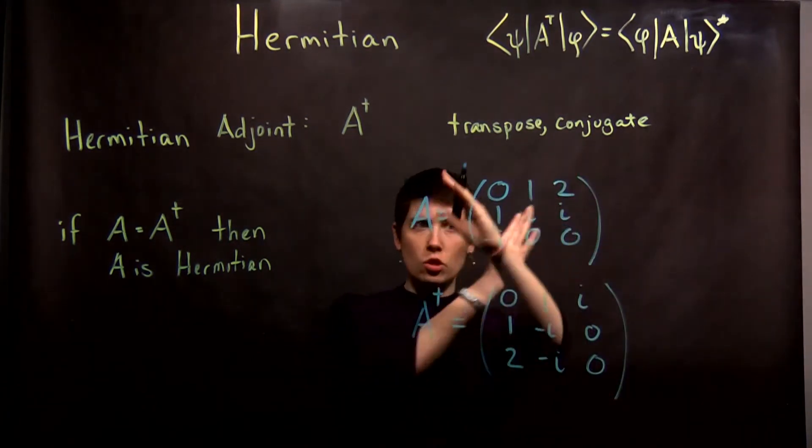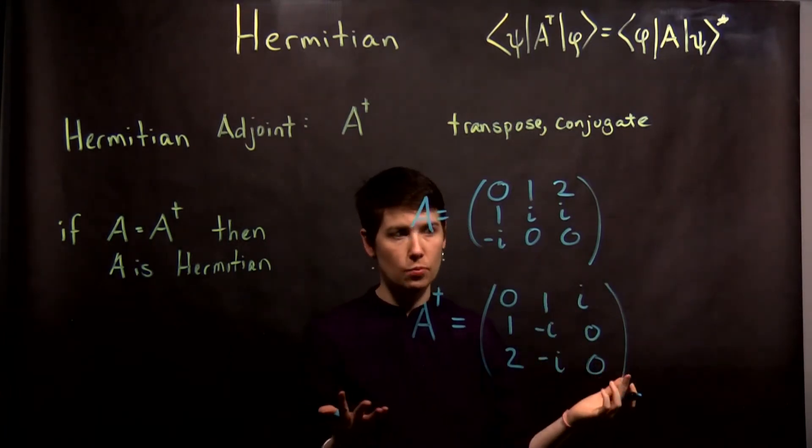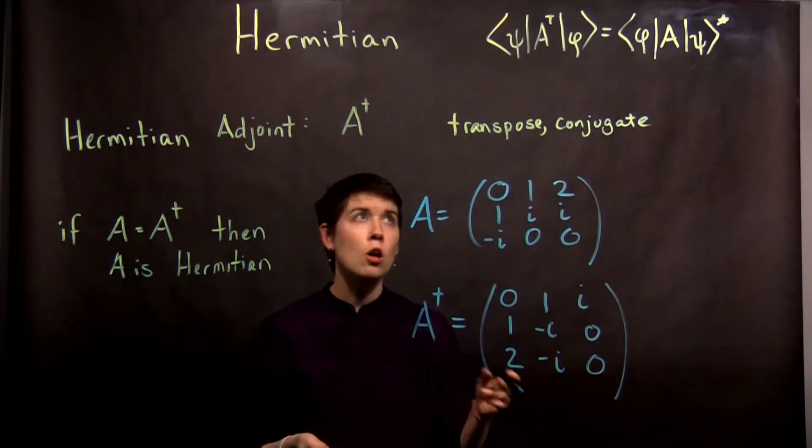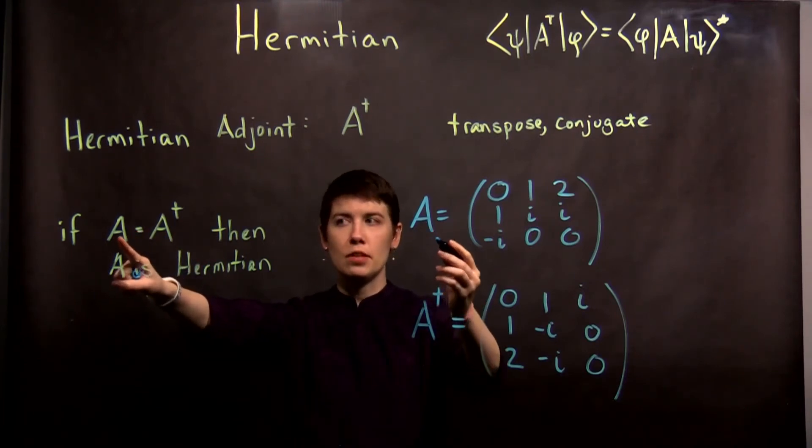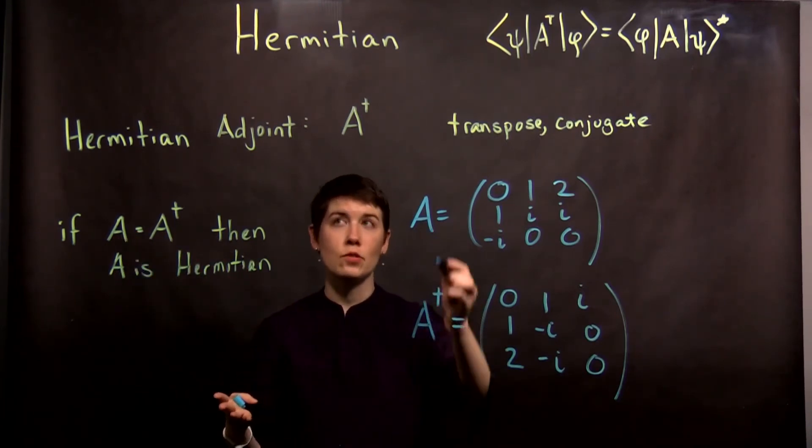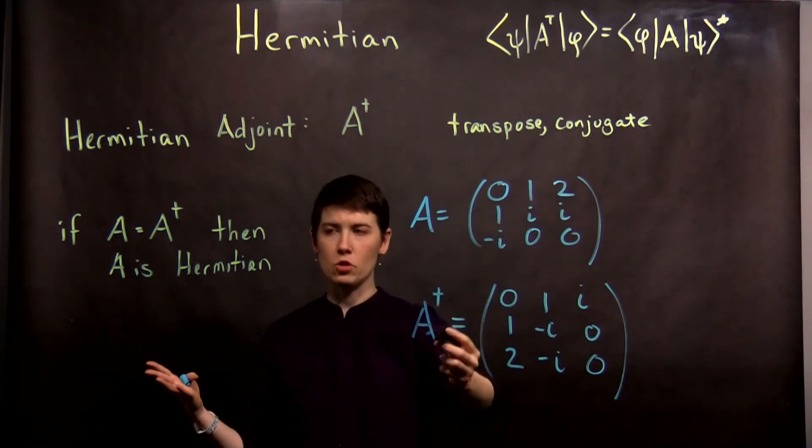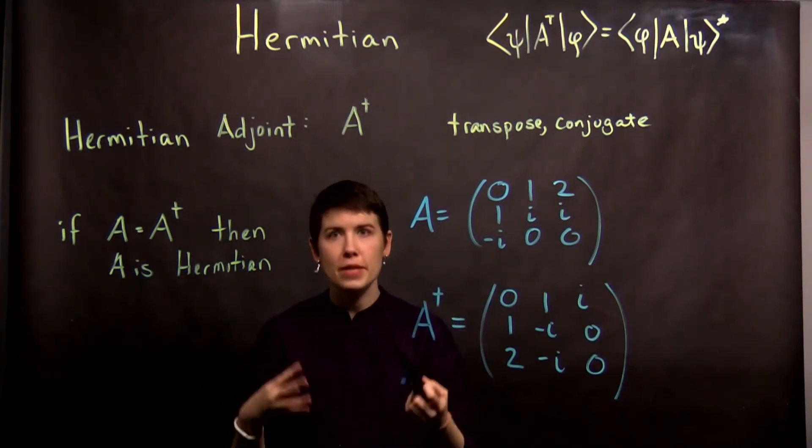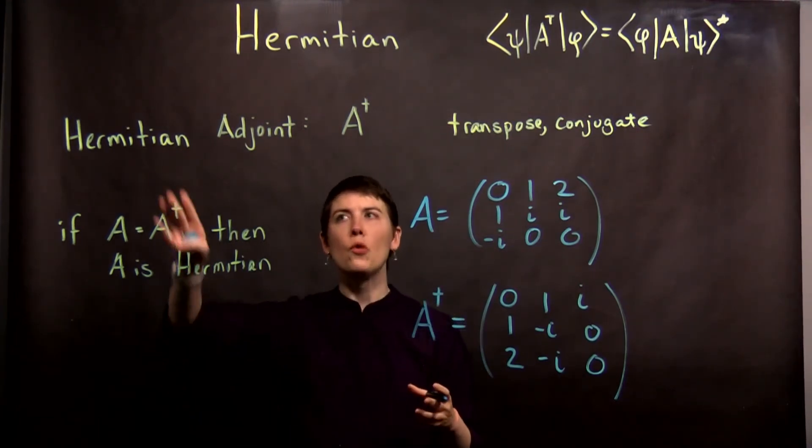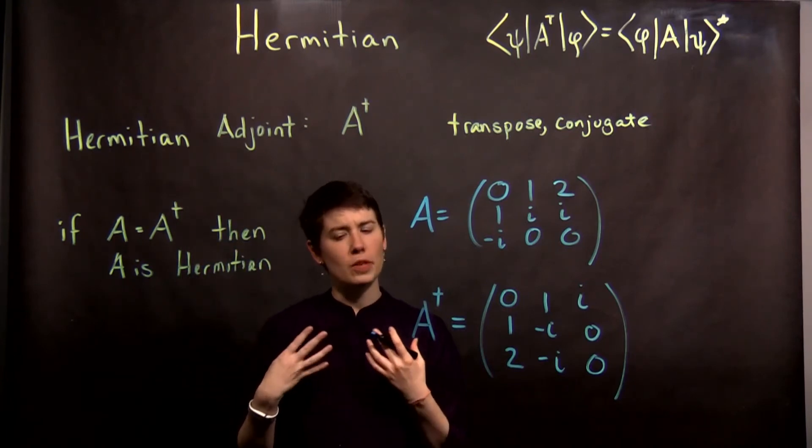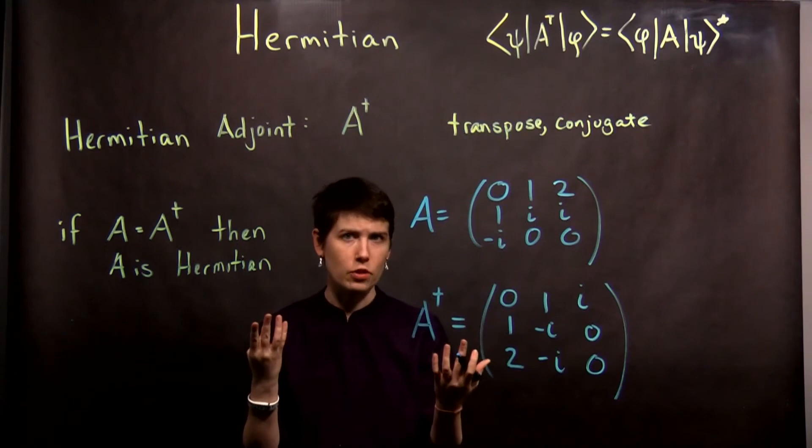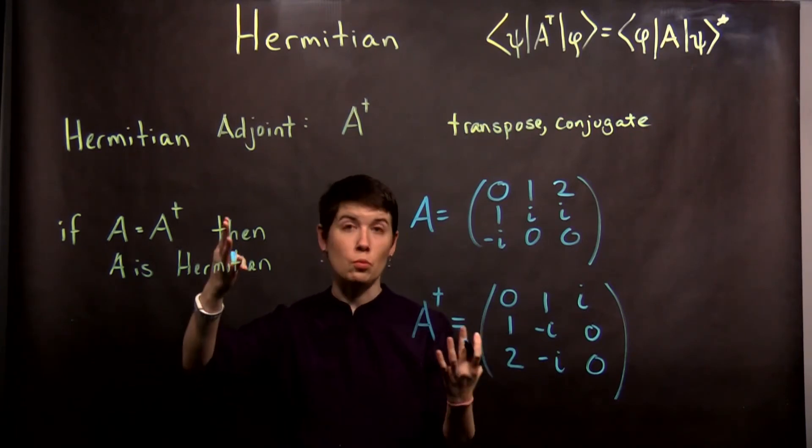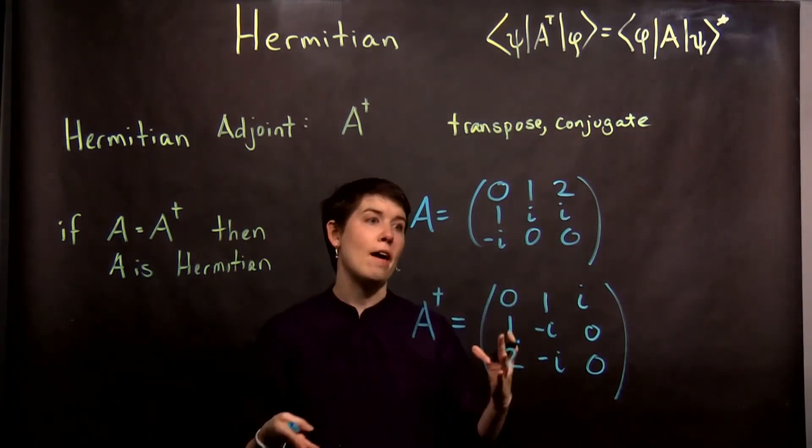So it's kind of like a rotation along the diagonal, and then i's become negative i's. So now, if the matrix is equal to its own Hermitian adjoint, then we say that the matrix is Hermitian. So Hermitian adjoint is like an operation, is a thing you can do to matrices, if it's a square matrix. But then Hermitian is a property that some matrices have.